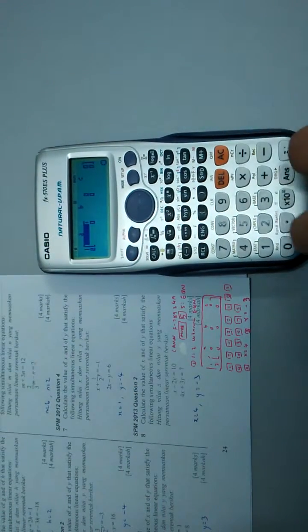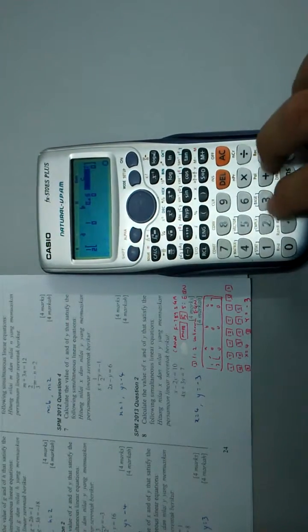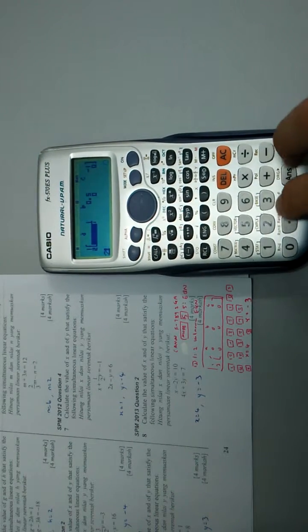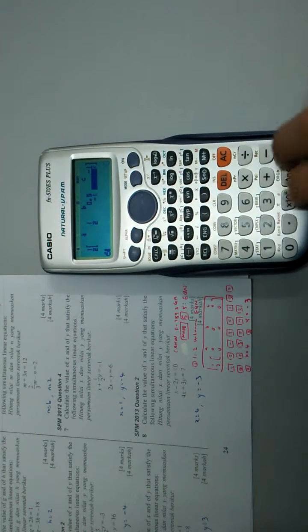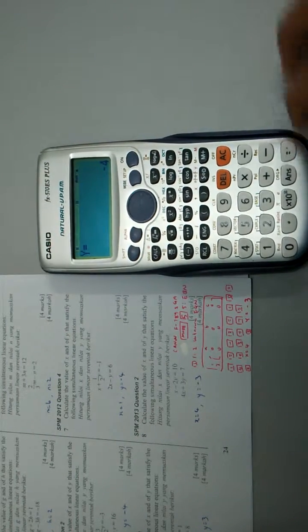Okay, and 1 equal, and 1 over 2 equal, negative 1 equal, 2 equal, negative 1, 6 equal. And then equal, x equal to 1 and y negative 4.